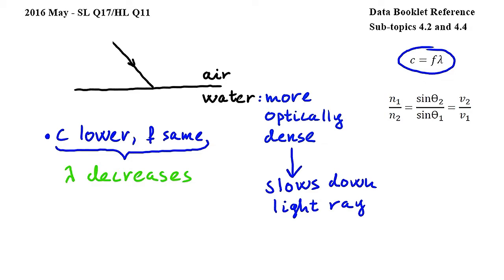Let's look at the angle by using this equation from subtopic 4.4, where theta 2 is the angle that the ray makes with the normal in water, and theta 1 is the angle that the ray makes with the normal in air, v2 is the speed of light in water, and v1 is the speed of light in air.